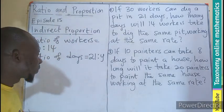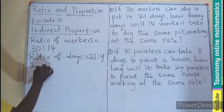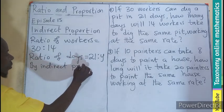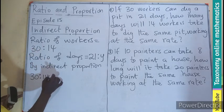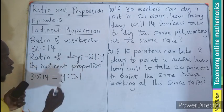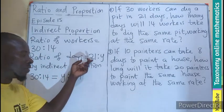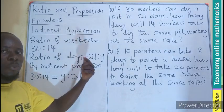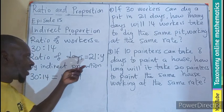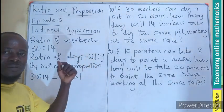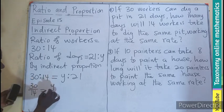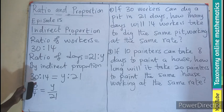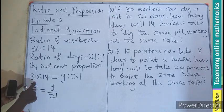Then we write them as a proportion. So by indirect proportion, this is going to be 30 is to 14 equals Y is to 21. In the previous episode under direct proportion, we don't change the position of the second ratio. But because this is indirect, we change the position in order to find the value we are looking for. So now we can write this as a fraction: 30 over 14 equals Y over 21.